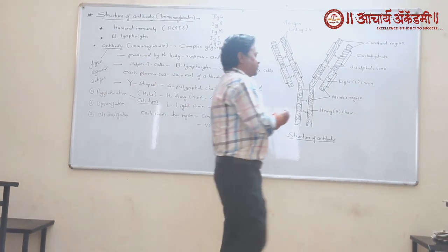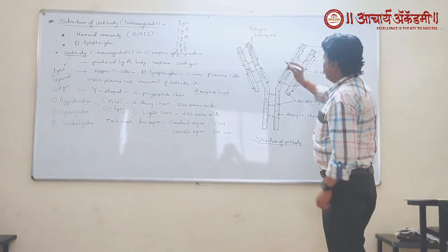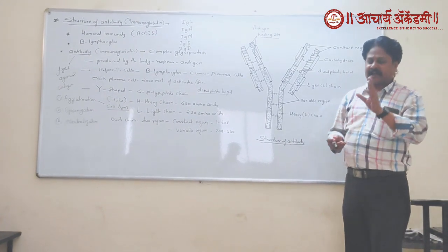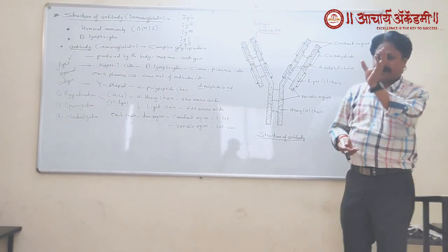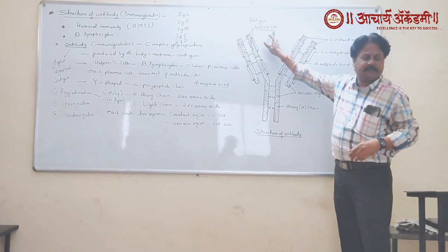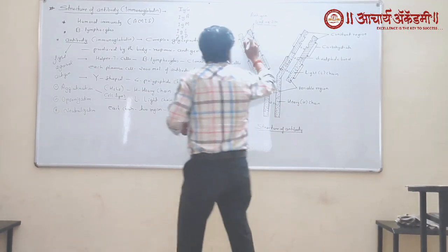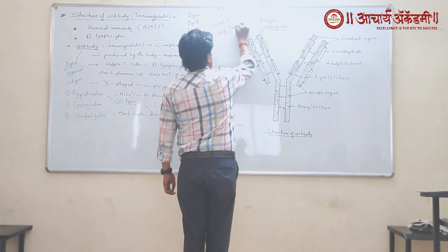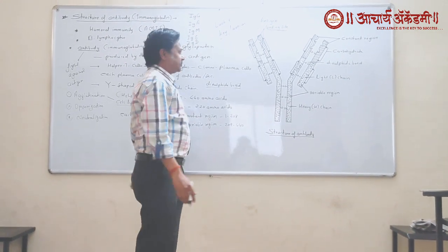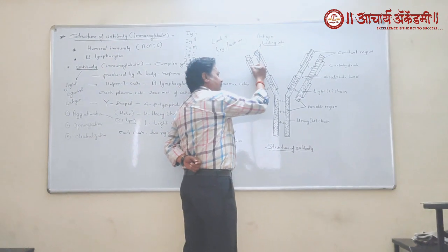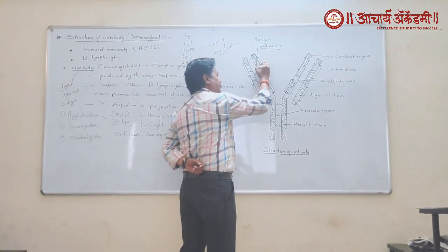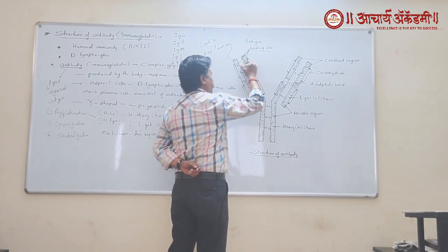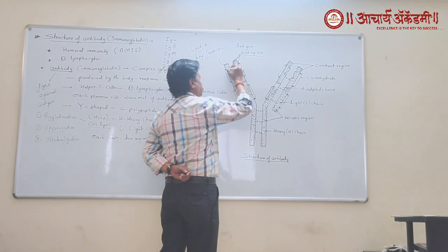This antibody consists of an antigen binding site — the site from where the antibody binds to the antigen. The antigen binds to this antibody in a lock-and-key fashion. The antibody consists of the lock mechanism, and the antigen, which binds to the antigen binding site, consists of the key mechanism. This is a stable binding of antigen to antibody, also known as the lock-and-key mechanism.